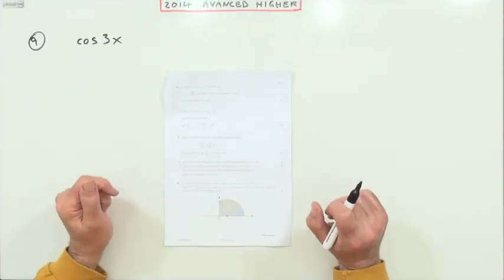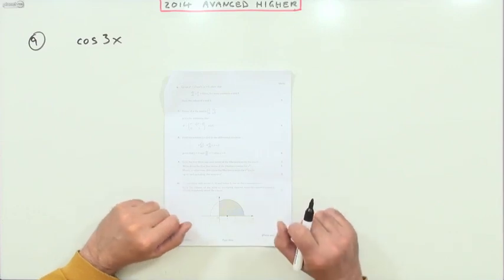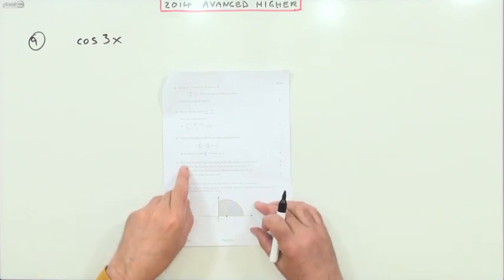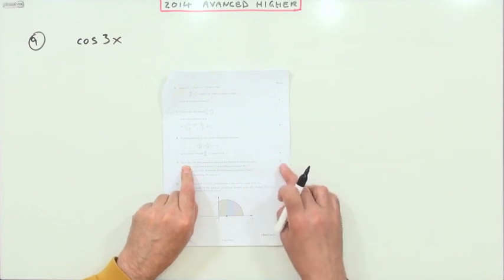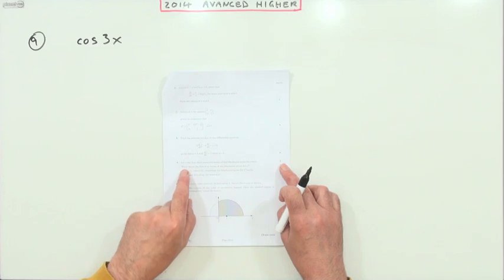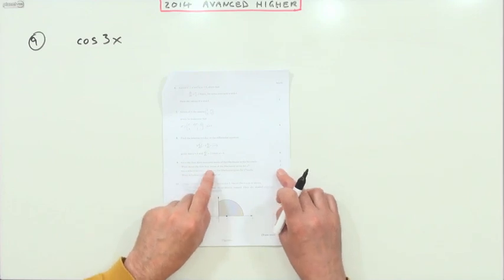Number nine from the 2014 advanced higher Maclaurin series. It starts off with: give the first three terms for two marks of cos(3x), and then just write down the first four terms for just one mark.